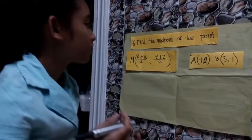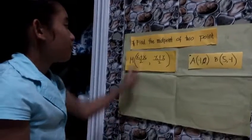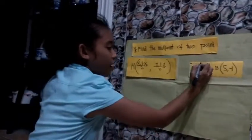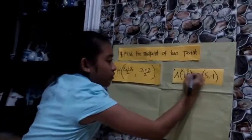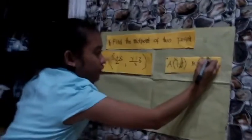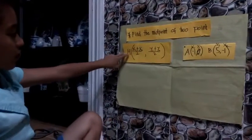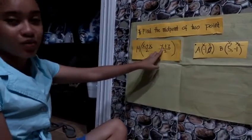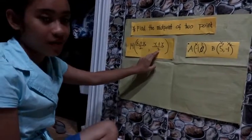This is my second example of the midpoint: find the midpoint of 2 points. Again, x₁, y₁, x₂, y₂. The formula is (x₁ plus x₂) divided by 2, and (y₁ plus y₂) divided by 2.